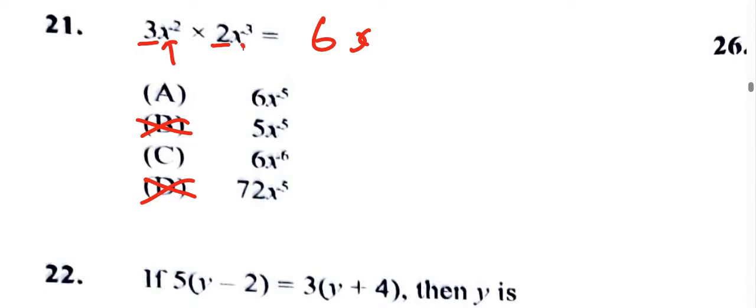And we add the powers. So if this is positive 2, then it's going to be 2 plus 3, and so we end up with 6x to the fifth power, which is going to be A as our solution.